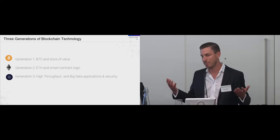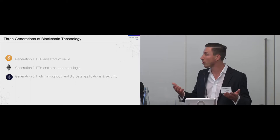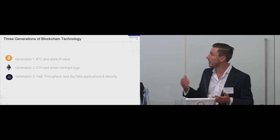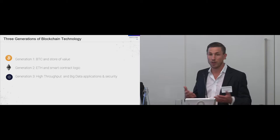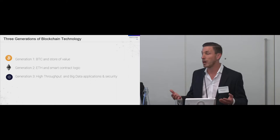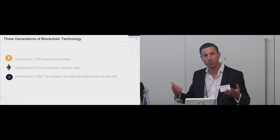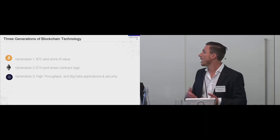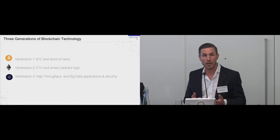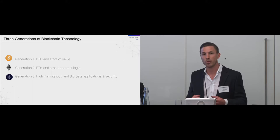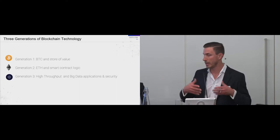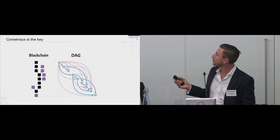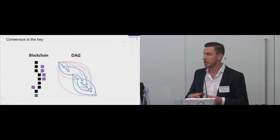Bitcoin started with claims to be the next global financial currency, but the story diverted to Bitcoin as a store of value. The next generation blockchain — Ethereum — started with a different value proposition: smart contracts, which are self-governing, self-executing, programmable contracts that self-execute and eliminate the need for an intermediary. My company is working at a third-generation blockchain characterized by high throughput, making it ideal for big data processing, sensor networks, and IoT networks that process a lot of data and securing those pipelines.